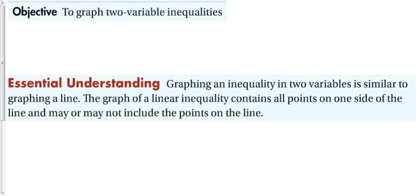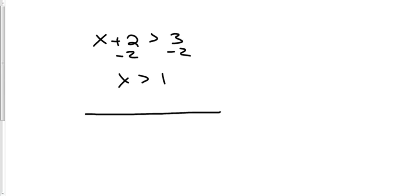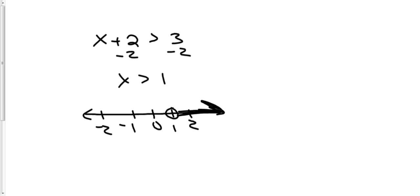Previously we've done something that looks like this: x plus 2 is greater than 3. The way we would graph something like that, subtract 2 from both sides, get x by itself, and we'd have x is greater than 1. Then we would graph it — make a number line, put an open circle around 1 because the solution does not include 1, and the shaded region would go to the right.